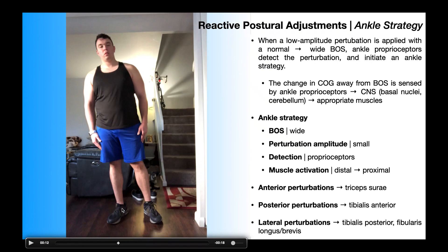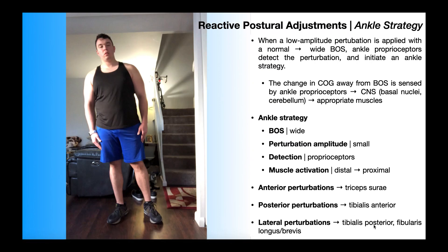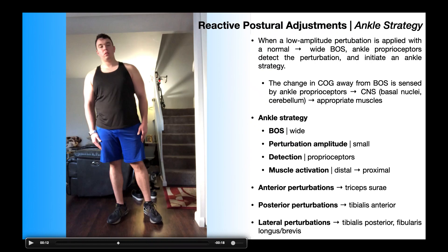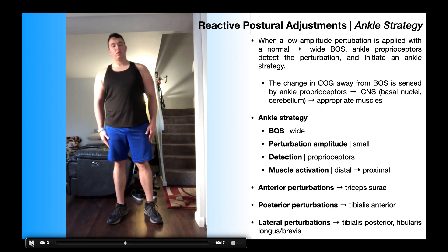Freeze-framing the right lateral strategy: at the right ankle, the subtalar joint is more everted. To slow down that eversion and contract concentrically to return upright, you need the muscles on the opposite side — mainly tibialis posterior, the major subtalar inverter. At the left ankle in this same scenario, the ankle is more inverted, so the everters — fibularis longus and brevis — would be needed at the left ankle to bring that leg back upright.